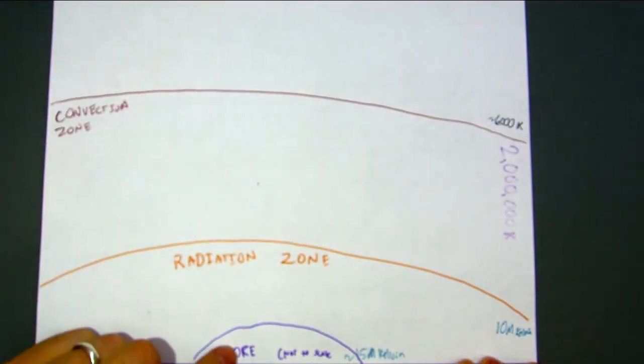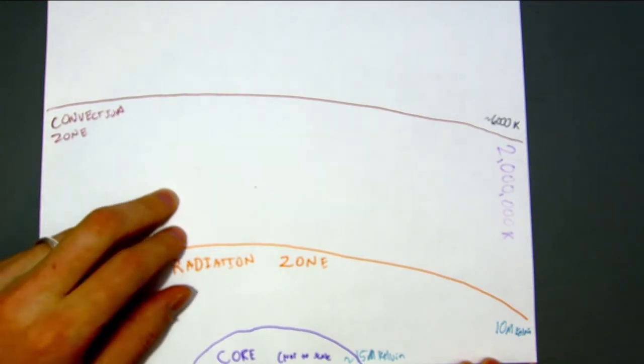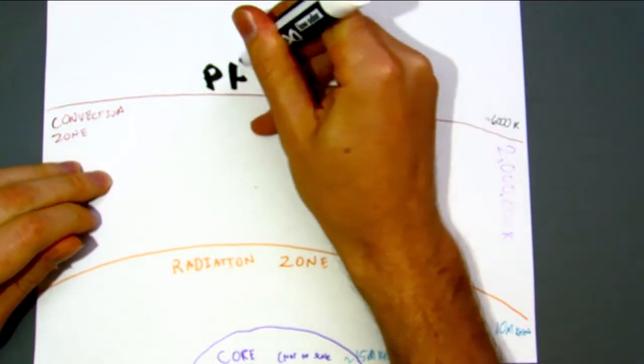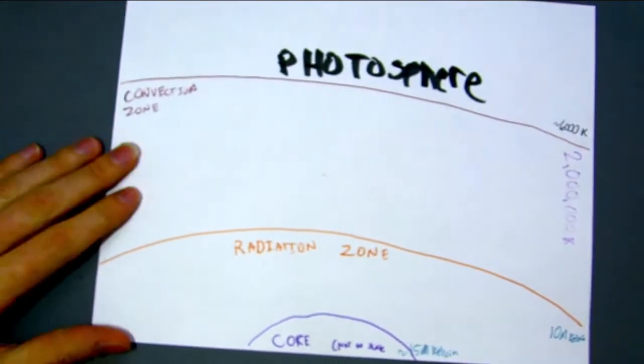The convection zone is above the core and the radiation zone. It's pretty much in the middle of the sun. Above the convection zone is the photosphere, which is basically the surface of the sun that you see.